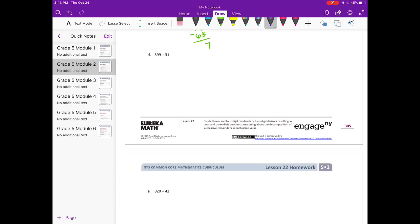399 divided by 31. Let's see. 31 can't go into 3, but it could go into 39 one time. 1 times 31 is 31. If we subtract we get 8. Bring down the 9. 31 can go into 89. Let's see. 31 times 2 would be 62. 31 times 3 would be 93. So that's too big. It can only go in 2 times. 2 times 31 is 62. If we subtract we get 12 remainder 27.